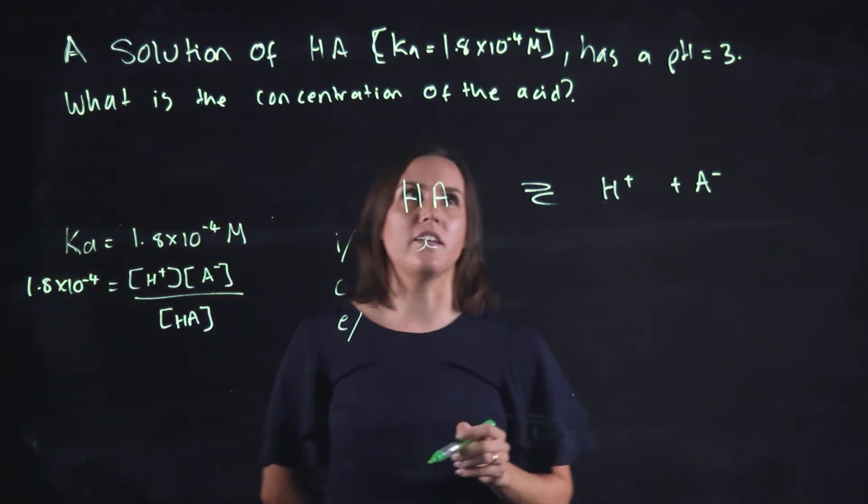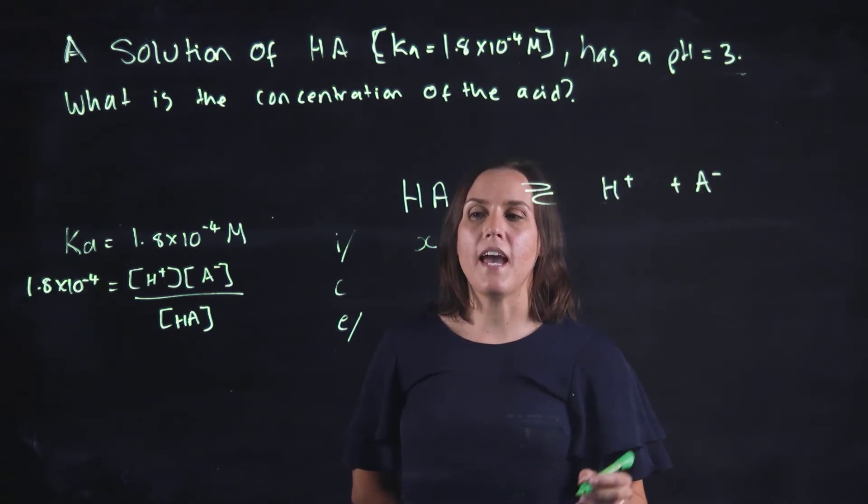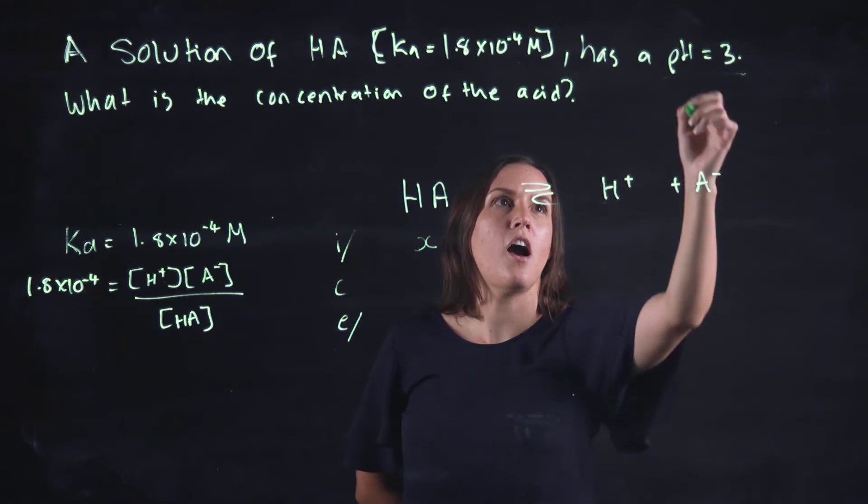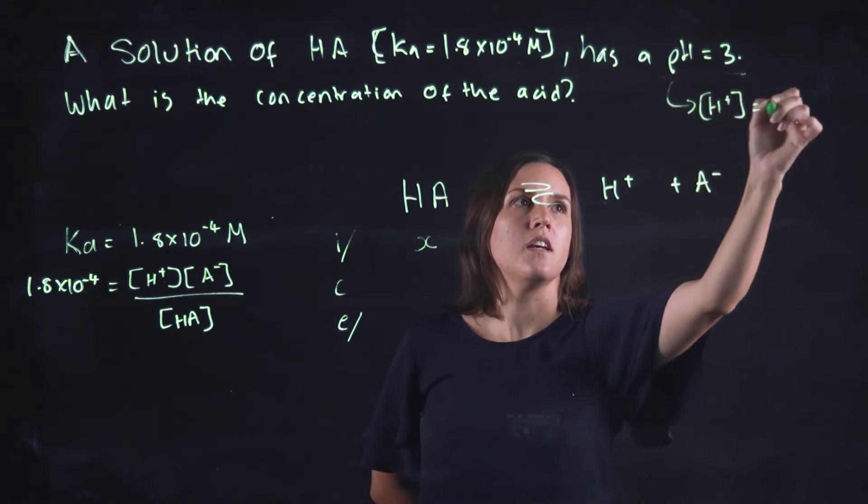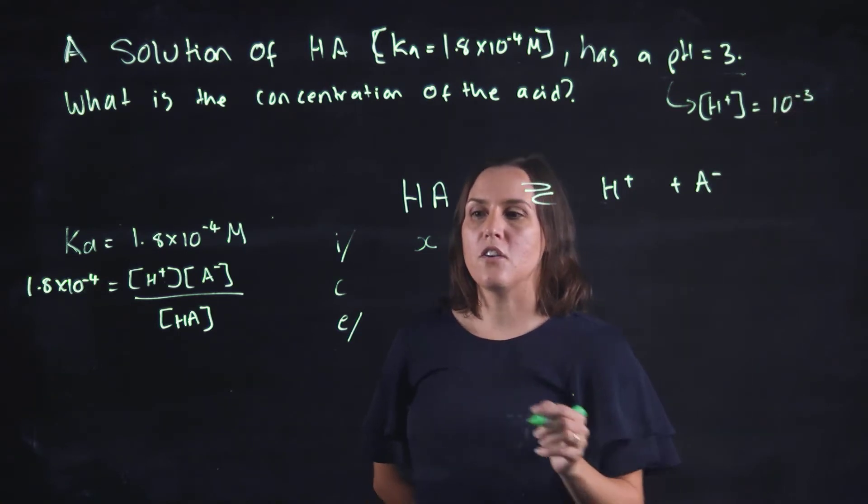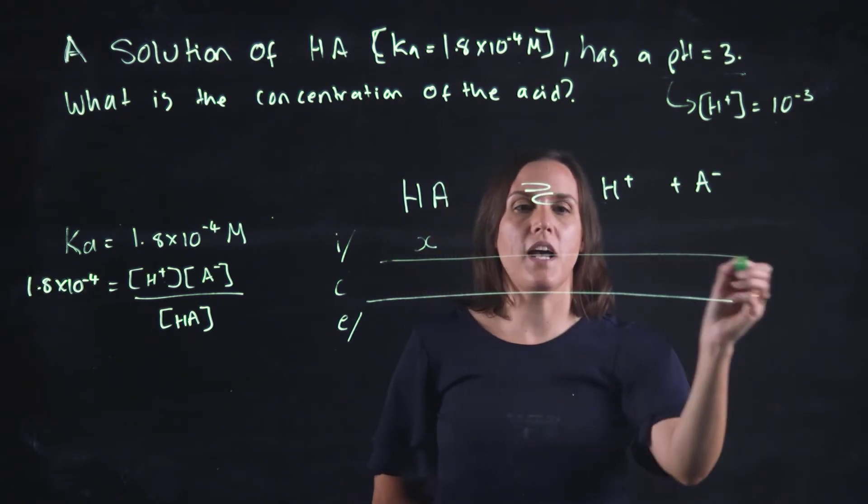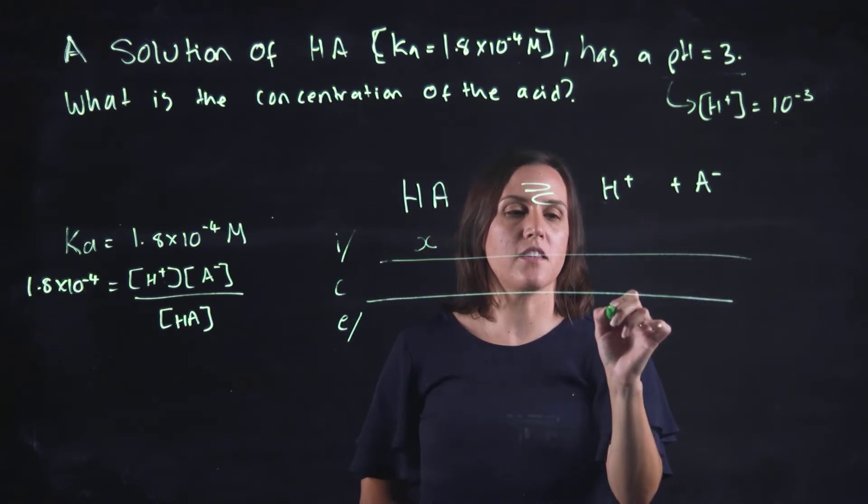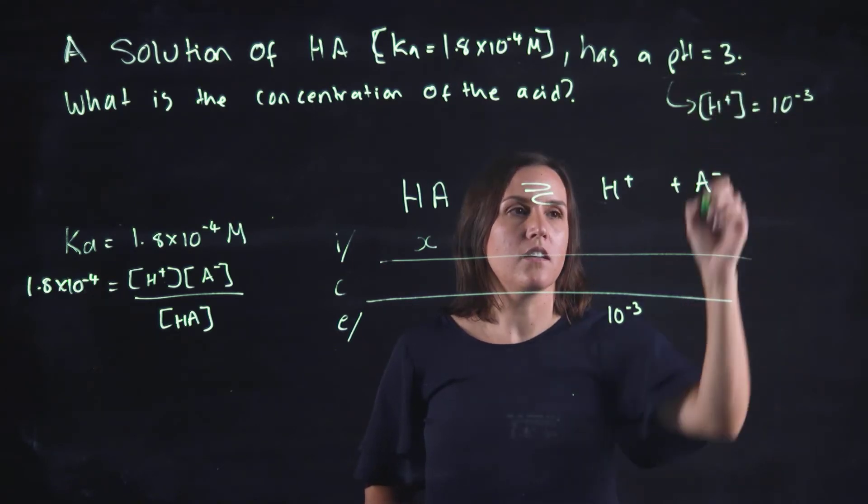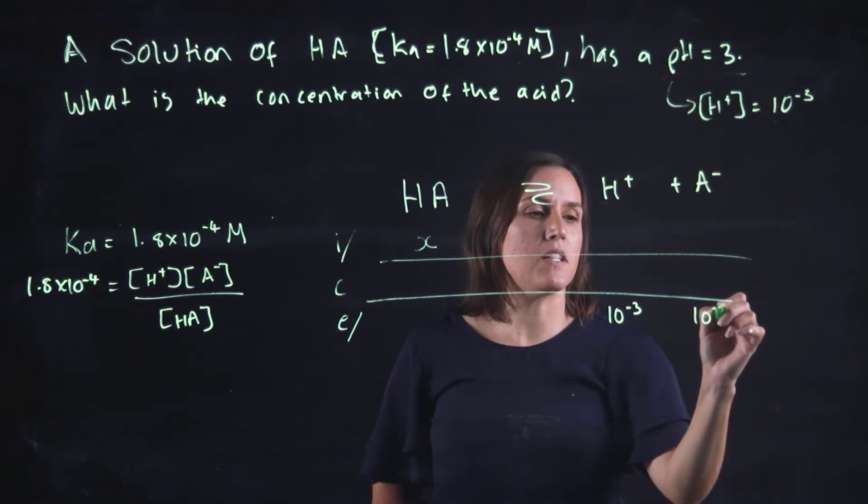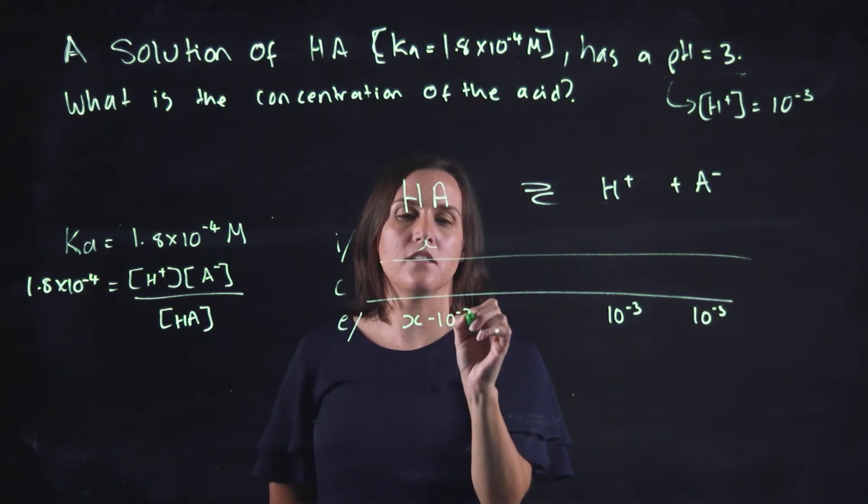So what else do I know? I know my Ka, I know my pH equals 3. So my pH is telling me my hydrogen ion concentration, which equals 10 to the minus 3. So at equilibrium, let's draw some lines in here to help me keep track. So this is 10 to the minus 3 at equilibrium because my pH equals 3. So my A- will be 10 to the minus 3.